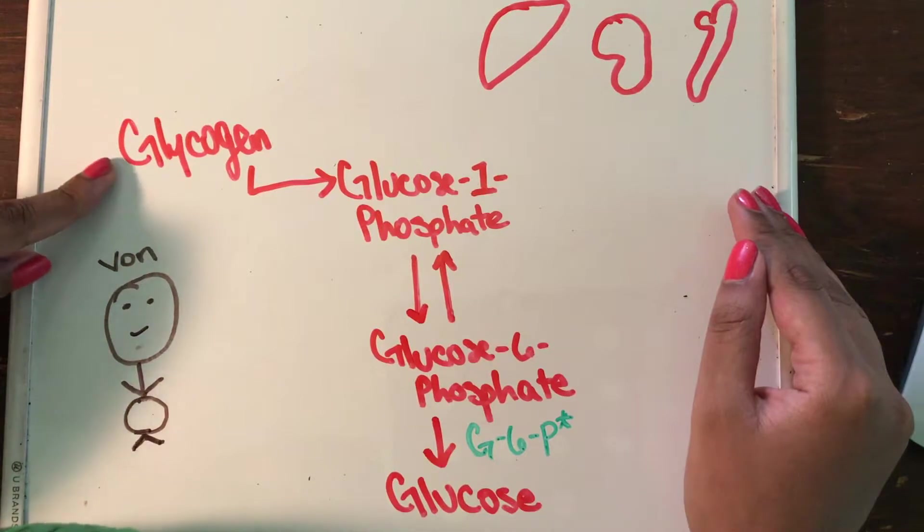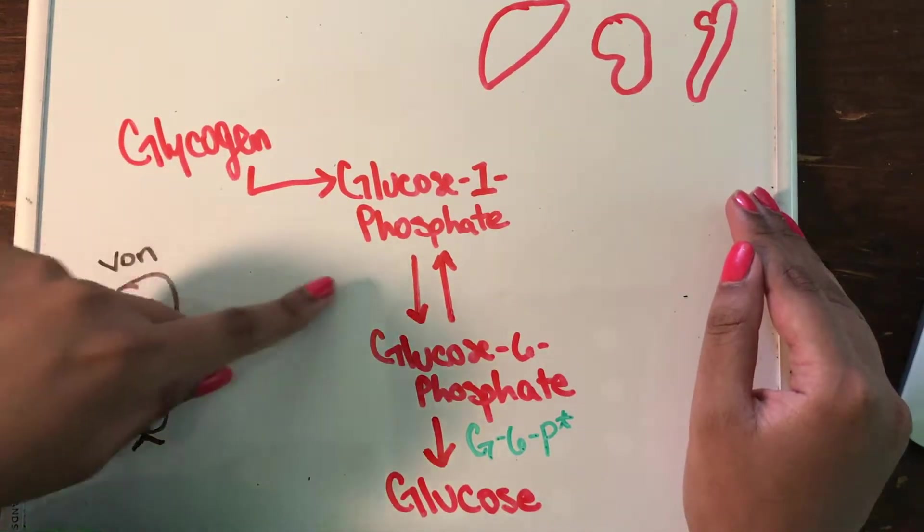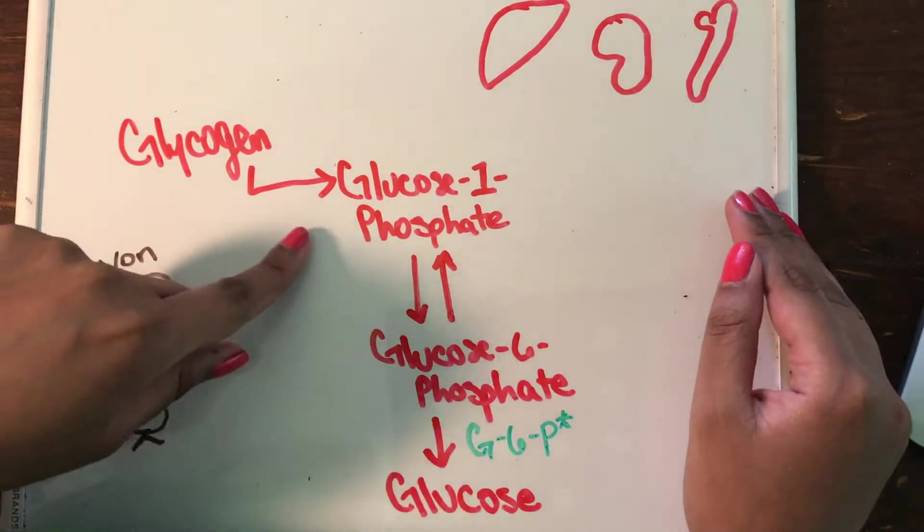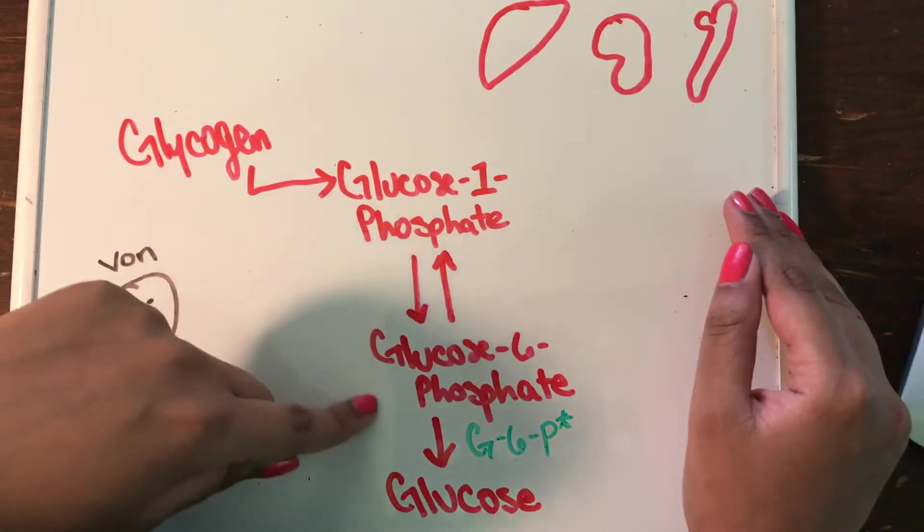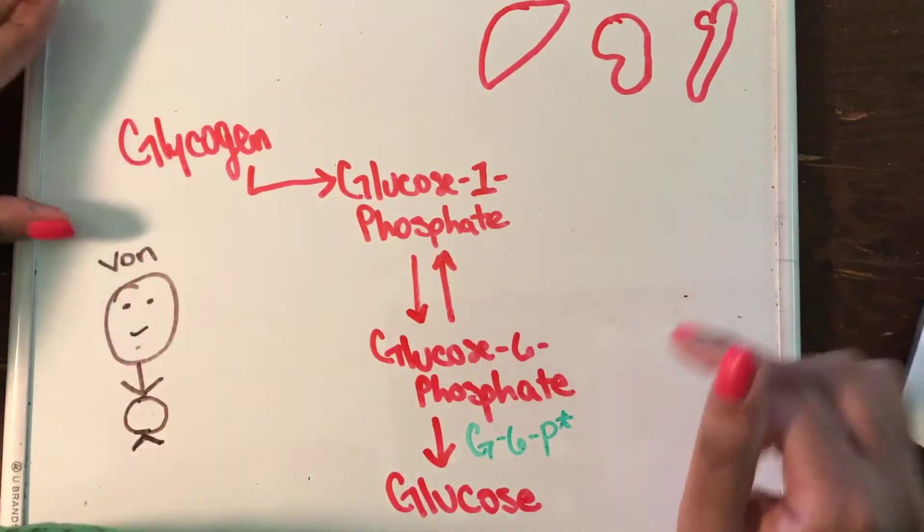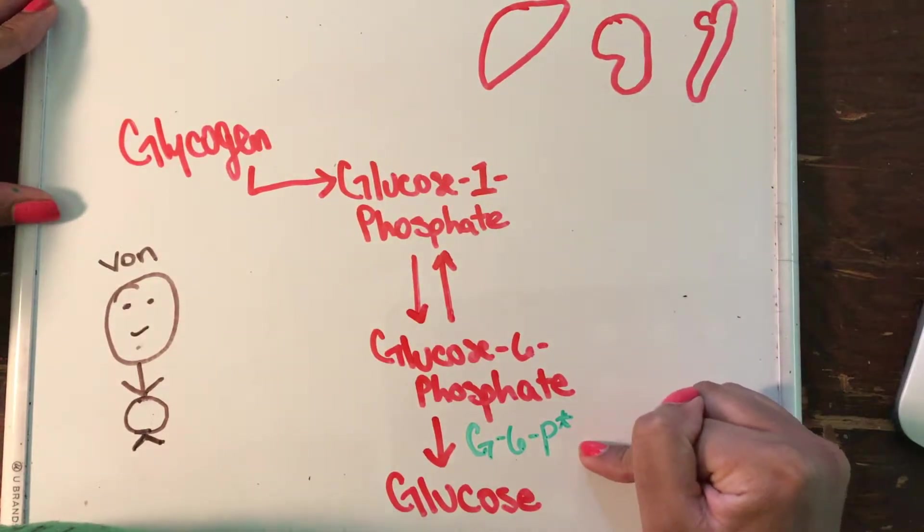And so this is the pathway that goes from glycogen to glucose 1-phosphate, and then glucose 6-phosphate and so on and so forth. But the main thing that we're going to focus on is this.